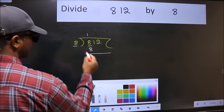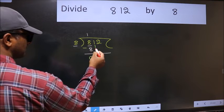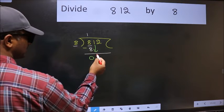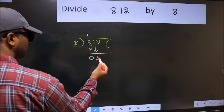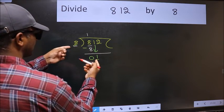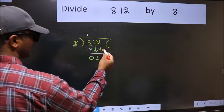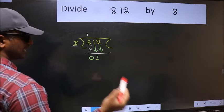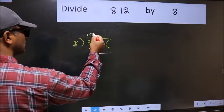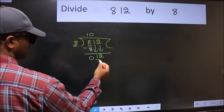Now we should subtract. We get 0. After this, bring down the next number, 1. Now here we have 1, and 1 is smaller than 8, so we should bring down the second number. The rule to bring down the second number is we should put 0 here, then only we can bring this number down.